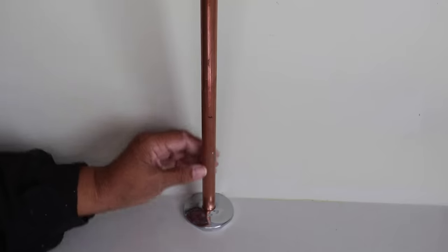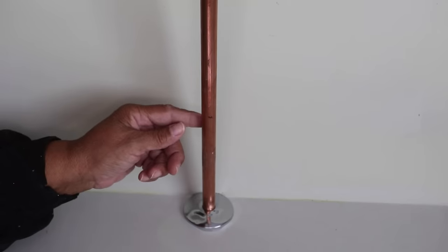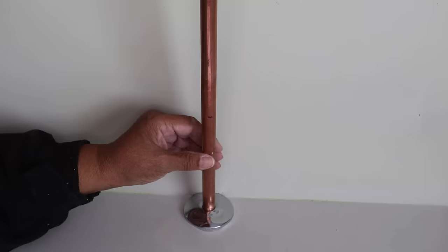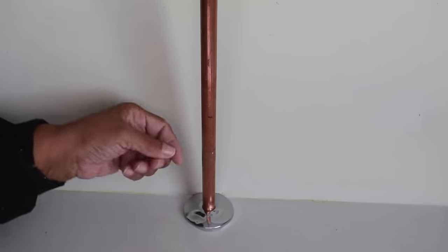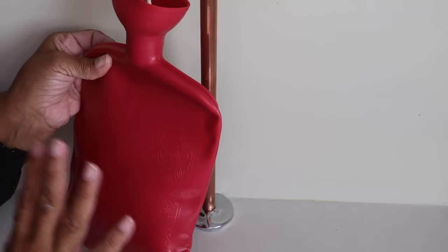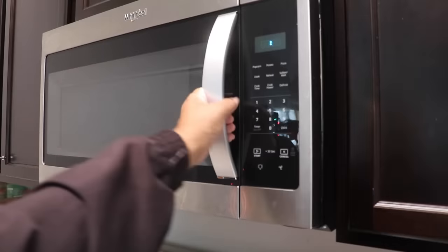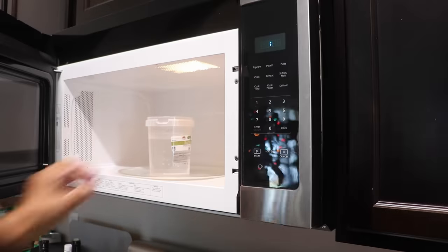Now what you want to do is you want to identify the pipe that's frozen and the area of that pipe that is frozen—that's where you want to concentrate the heat. Now you want to take your hot water bottle here and you want to fill it with hot water that you've either heated up in the microwave or you heat it up on the stovetop.